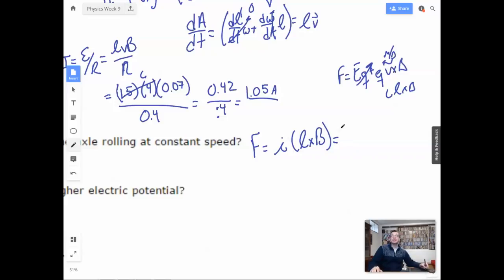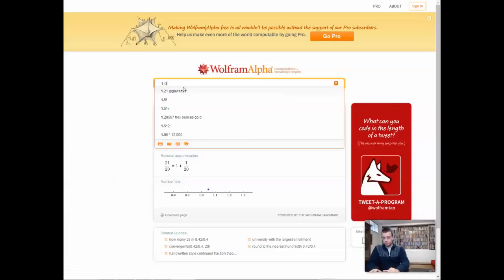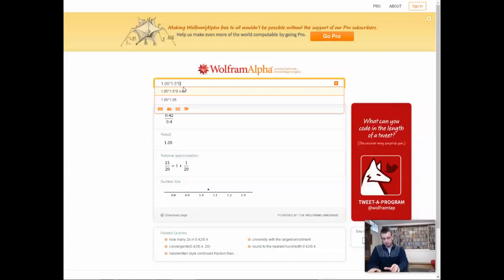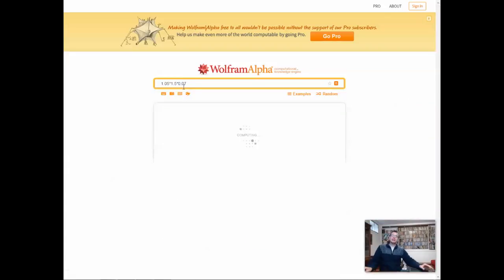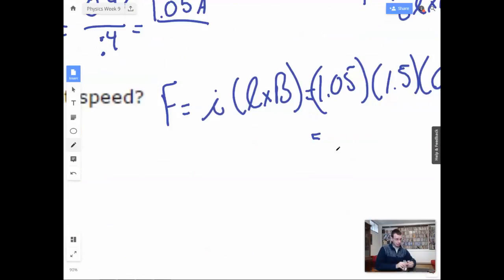So let's see. The current, we already have it. So 1.05. We know the length of the axle, 1.5. We know the magnetic field, which is 0.07. So we do 1.05 times 1.5 times 0.07. 0.11. So we have 0.11 newtons. Got it.